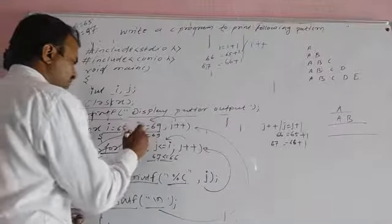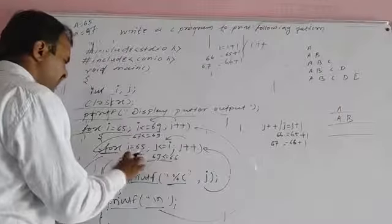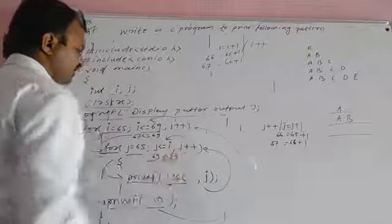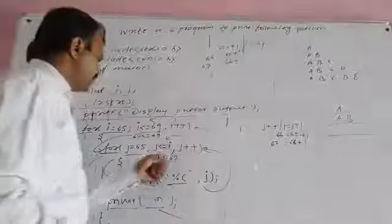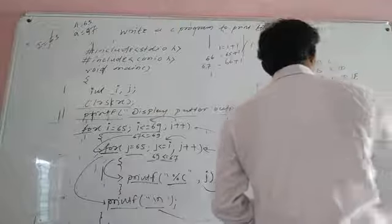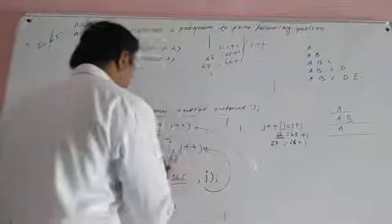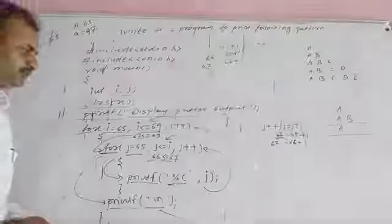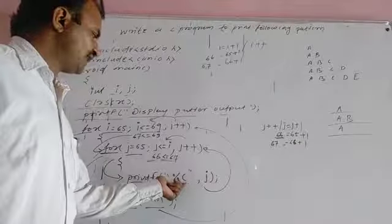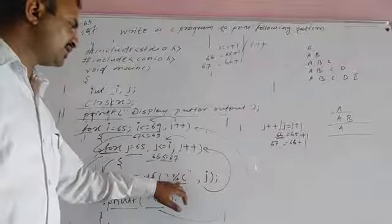The outer loop increments i to 67. Condition 67 less than or equal to 69 is true. J is re-initialized to 65. The %c format specifier converts the integer j value to its character equivalent, so 65 displays A, 66 displays B, and 67 displays C on the third row.